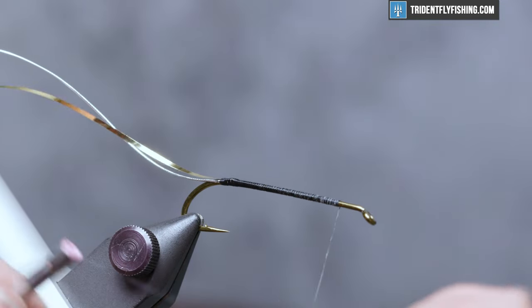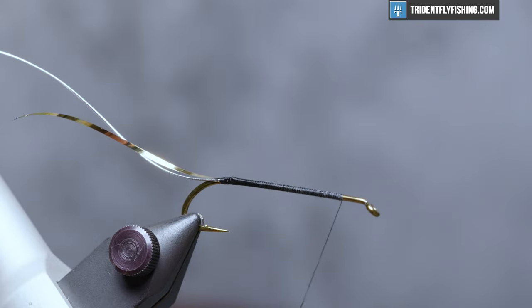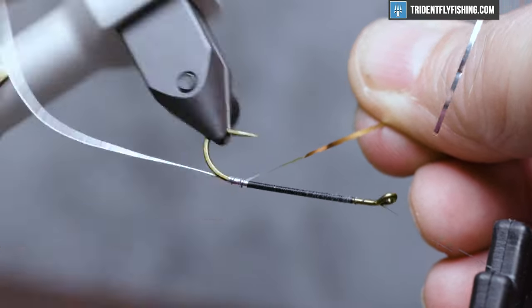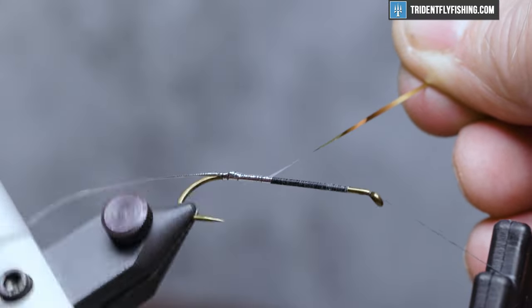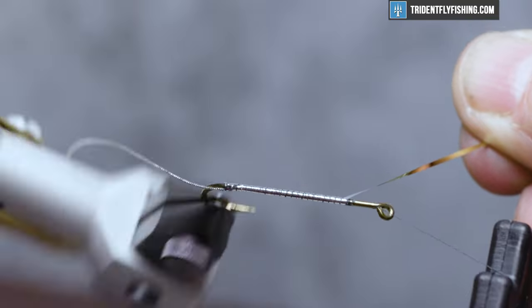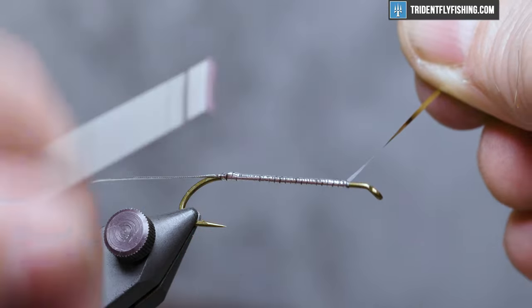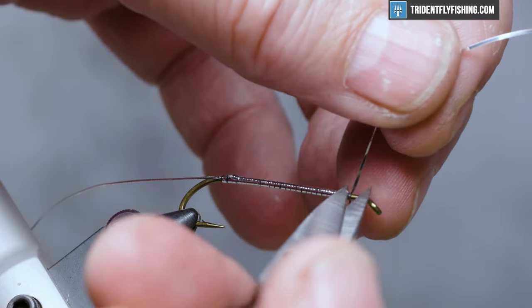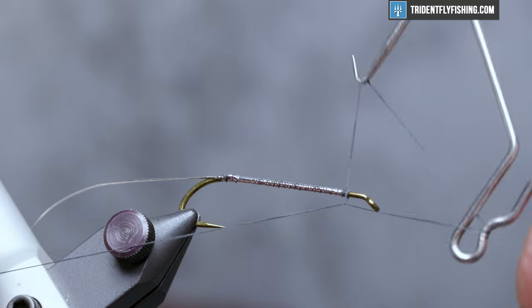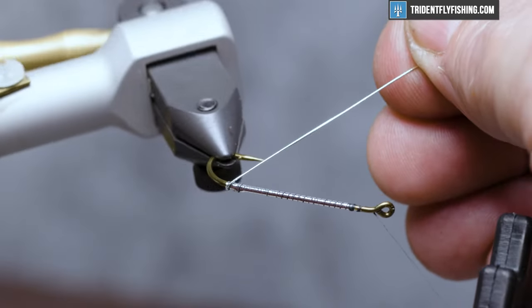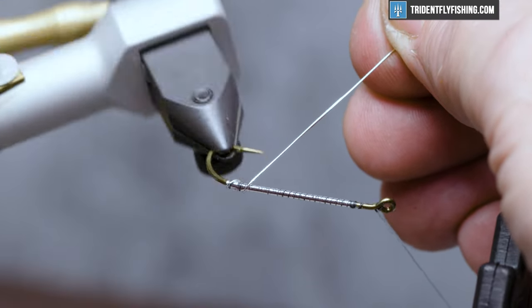And we'll save our work here. I'm going to use the bobbin cradle and the rotary function of the vise to tie this long body in. And we'll capture our material here for the excess, save our work, and once again we're going to use the rotary function of the vise to make the rib just some nice even open spiral turns.